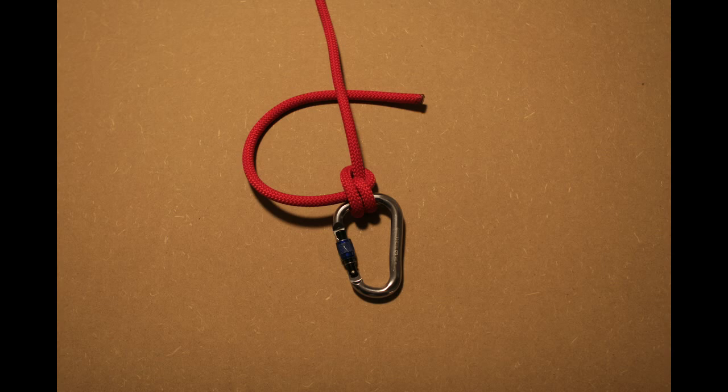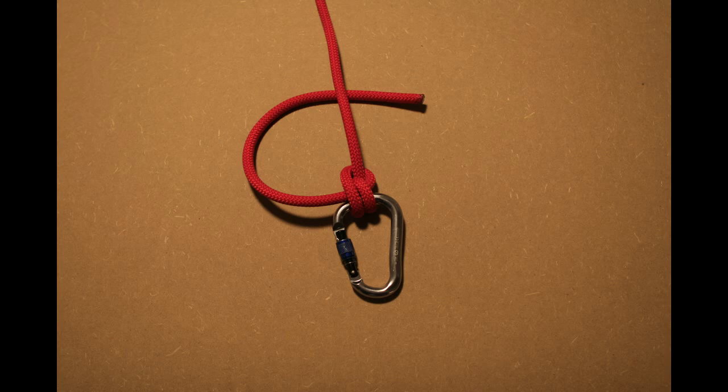To form the half hitch go around the standing part. This forms a loop. Now feed the end of the rope through this loop and pull tight.